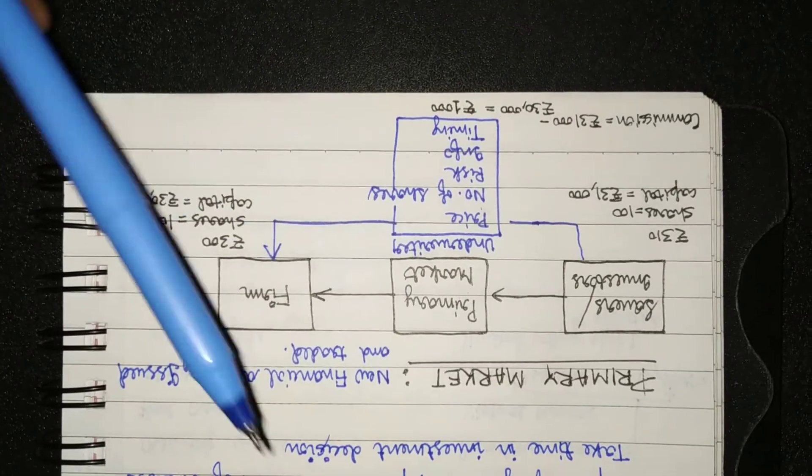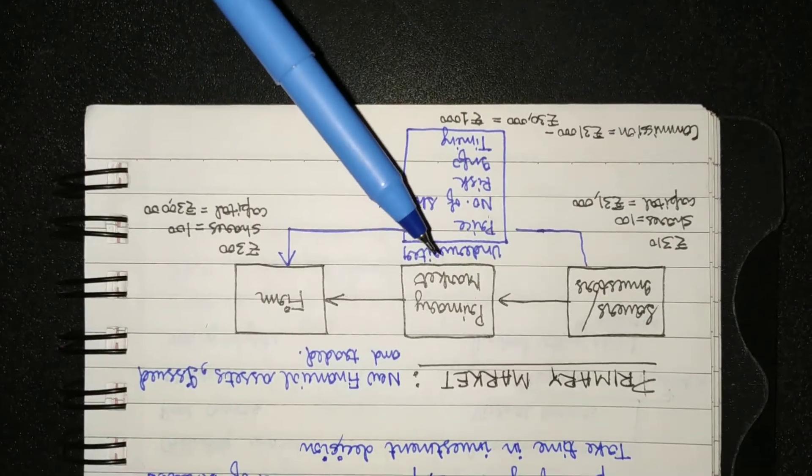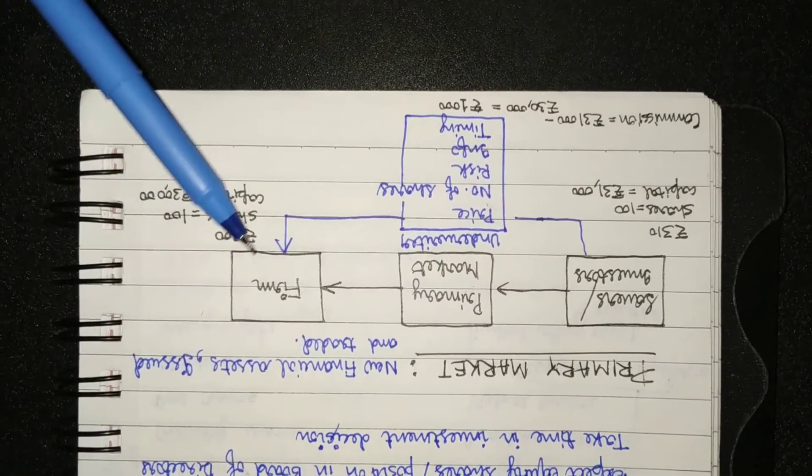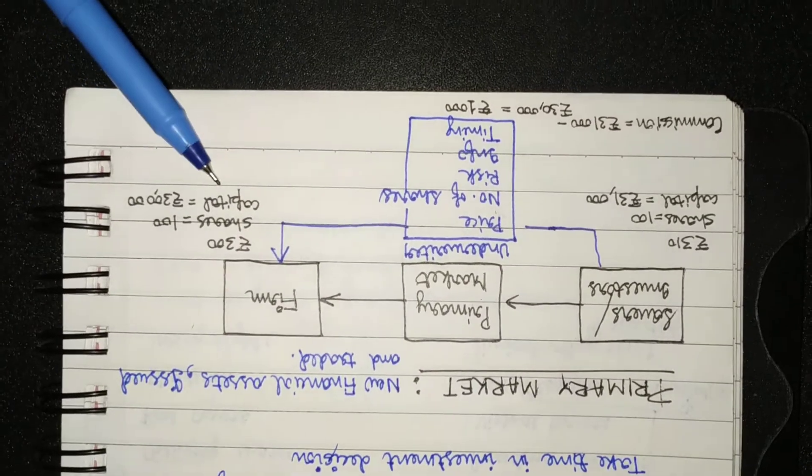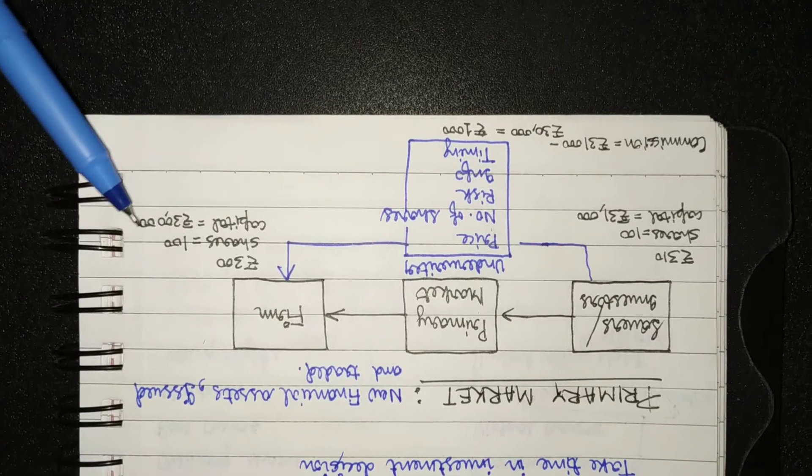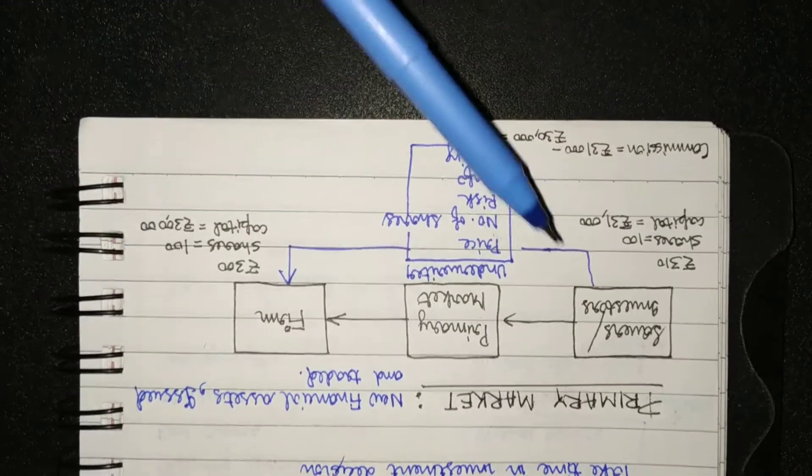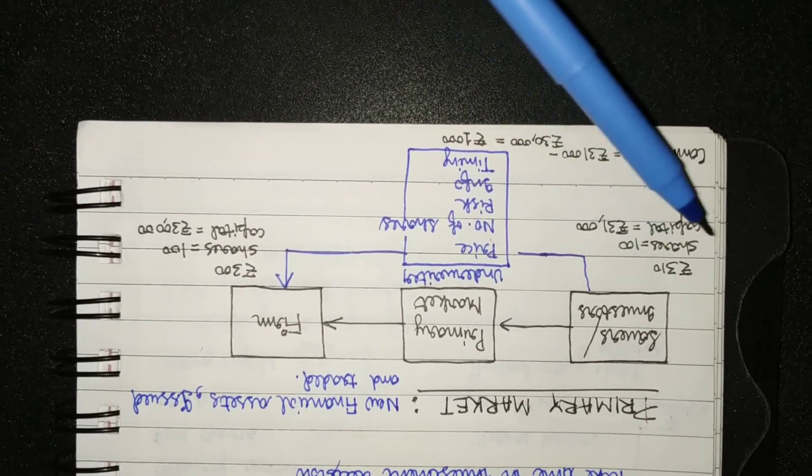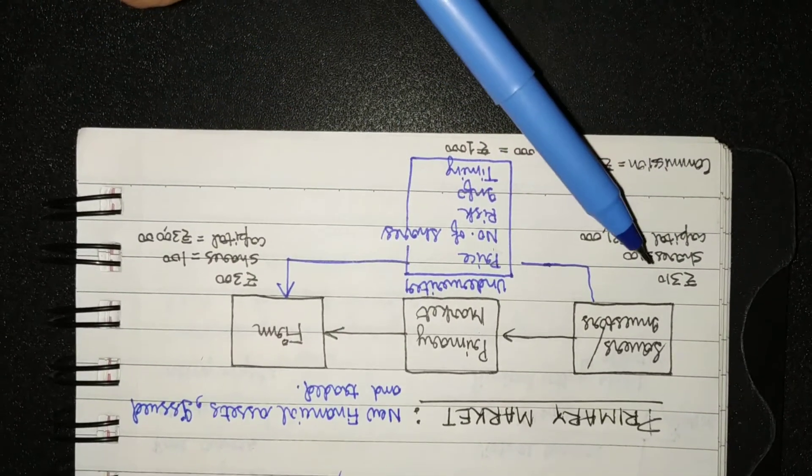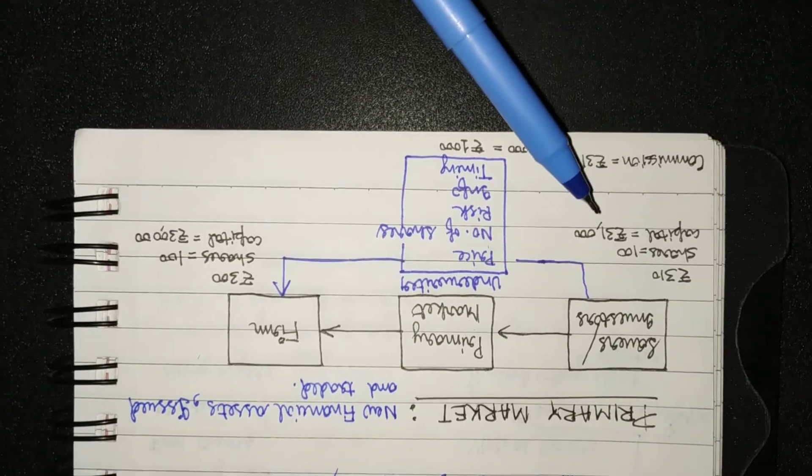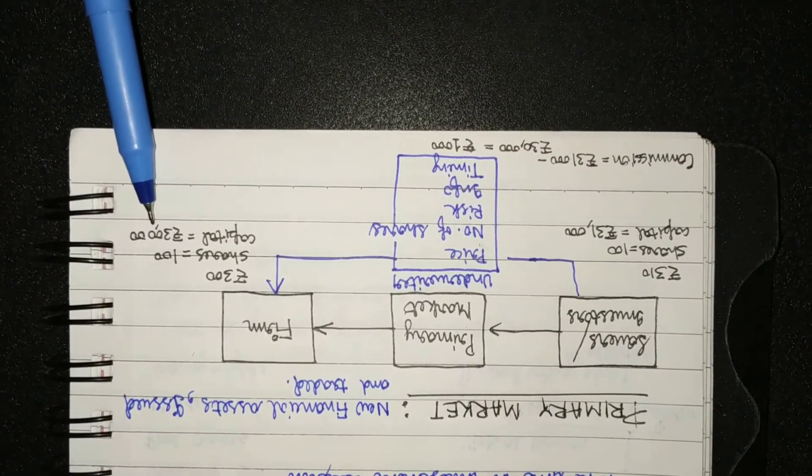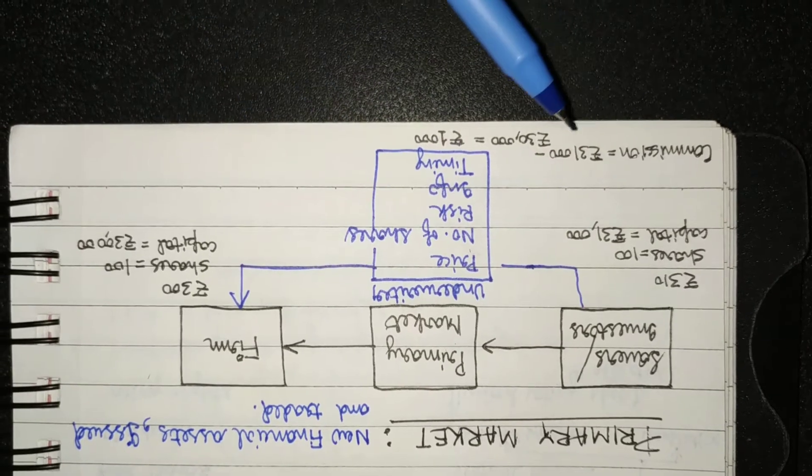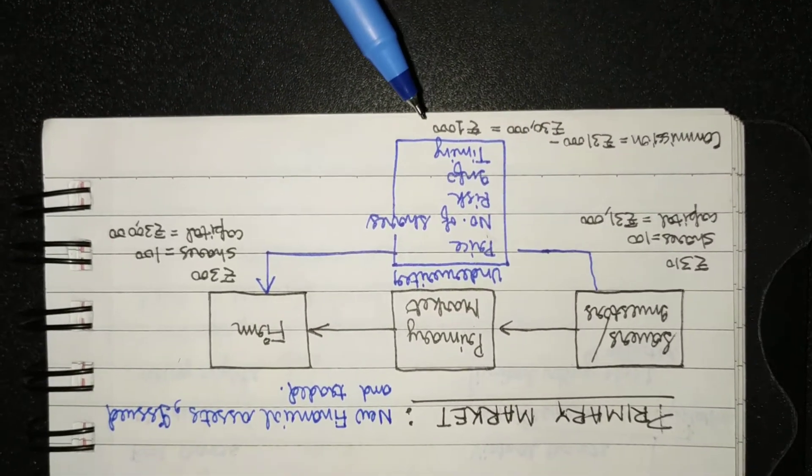Now the firm, the saver or the investor, after the underwriter reads them well, the underwriter asks the firm what is the amount of capital you need. The firm says roughly 30,000. Now the underwriter knows that investors can afford rupees 310 per share, so he quotes the share price to be rupees 310, and the capital generated is rupees 31,000. But the firm needs rupees 30,000, and hence the commission of the underwriter is rupees 31,000 minus 30,000, that is rupees 1,000.